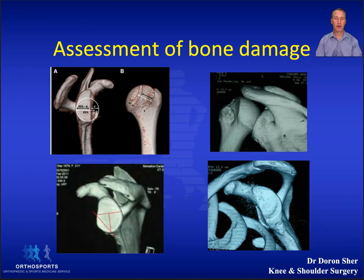If you are looking for bone loss then a CT scan is needed with 3D reconstructions of the humeral head and the glenoid. This allows you to measure and calculate if the lesion is on track or off track, which strongly correlates with the likelihood that the shoulder will re-dislocate if a bone restoration operation is not performed.